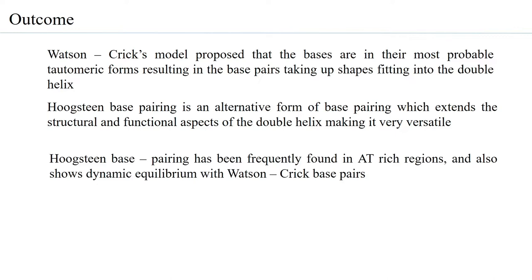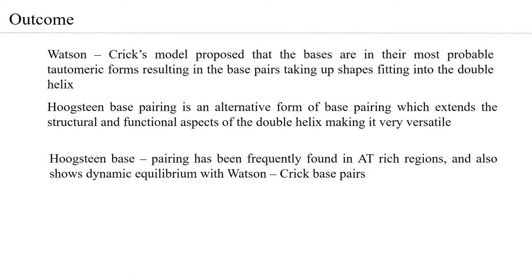Hoogstein base pairing has been frequently observed in AT-rich regions — where there is a stretch of ATs, there is more probability of Hoogstein base pairing. It is less common in GC-only regions, though more recent studies show its occurrence depends not just on sequence but also on the surrounding environment. Hoogstein base pairing has been found to be associated with certain biological functions.